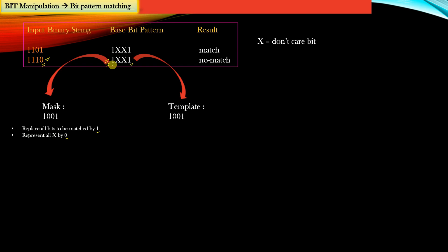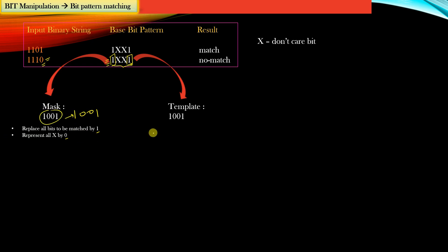Here you can see that all the bits which need to be matched are replaced by one — the bits to be matched are this one and the last bit. The don't-care bits are replaced by zero. This is the mask value that we get.